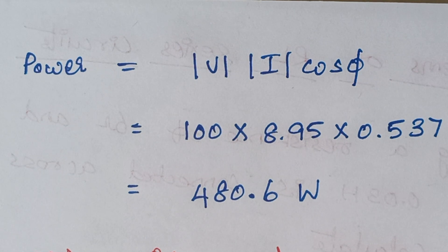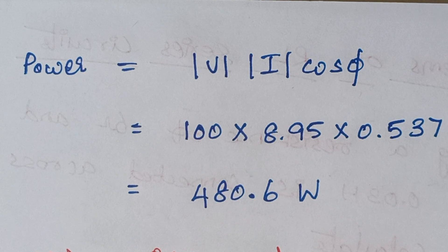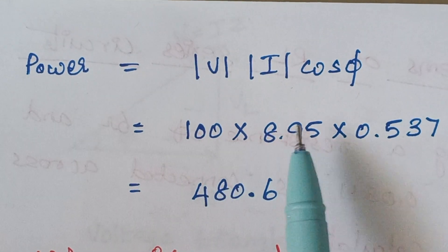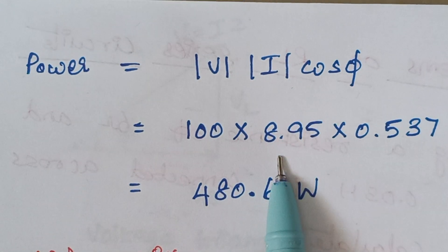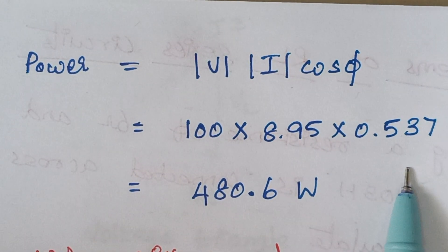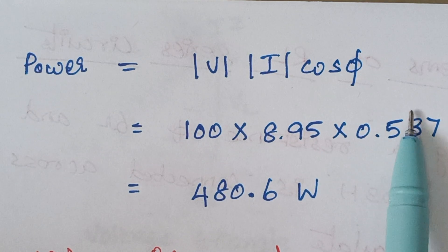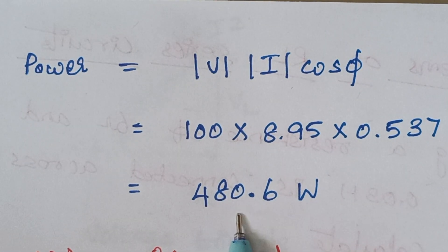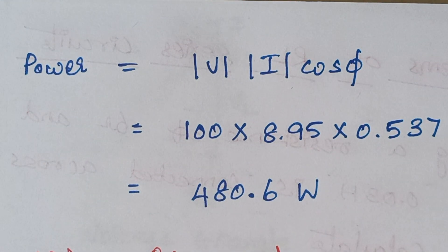The final thing is to calculate the value of power. Power is given by the formula VI cos φ. The value of V is given in the problem, I we had calculated, and cos φ we had just now calculated. Substituting the values accordingly gives the answer as 480.6 watts.